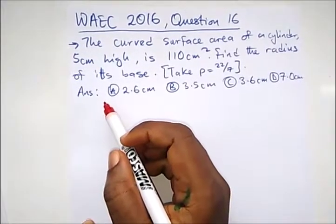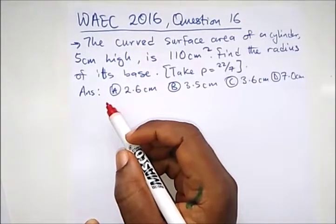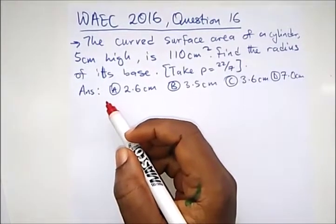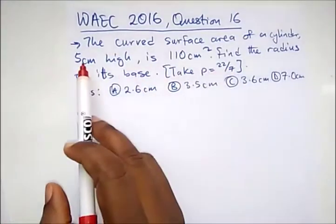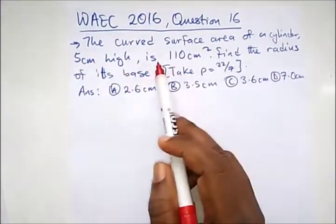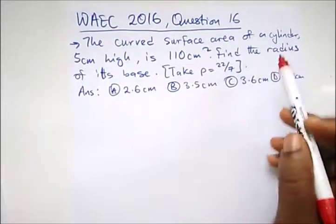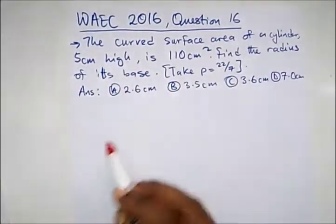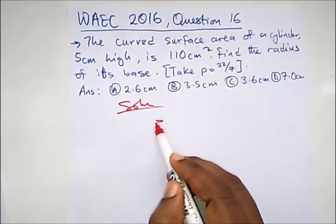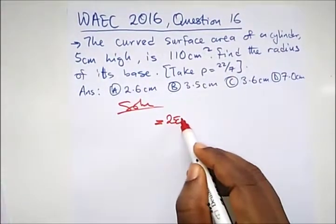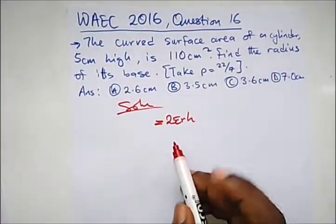So let's go straight to the questions. We have a question from 2016, WAEC question 16. It says the curved surface area of a cylinder, five centimeters high, is 110 centimeters squared. Find the radius of its base.